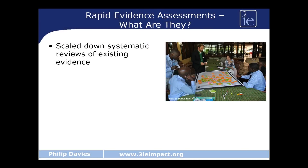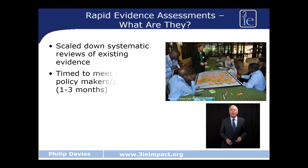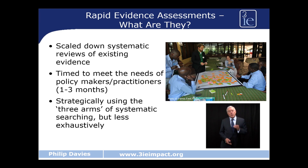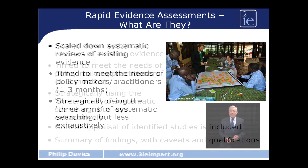Rapid evidence assessments are scaled-down versions of a systematic review, designed to help policymakers get evidence in between one and three months. This is because typically a systematic review can take up to a year, depending on the number of studies to search for and include. A rapid evidence assessment is able to do it much quicker, but because it does it quicker, it can't be as exhaustive or comprehensive in its searching. We search in a much more strategic way, focusing on electronic sources, electronic databases and electronic libraries. We do look at the other sources, but not in exhaustive detail. We give considerable attention to the grey literature, mainly by looking at websites of research organisations or contacting key people in the area we're studying. We also offer a critical appraisal of all the studies that we include.